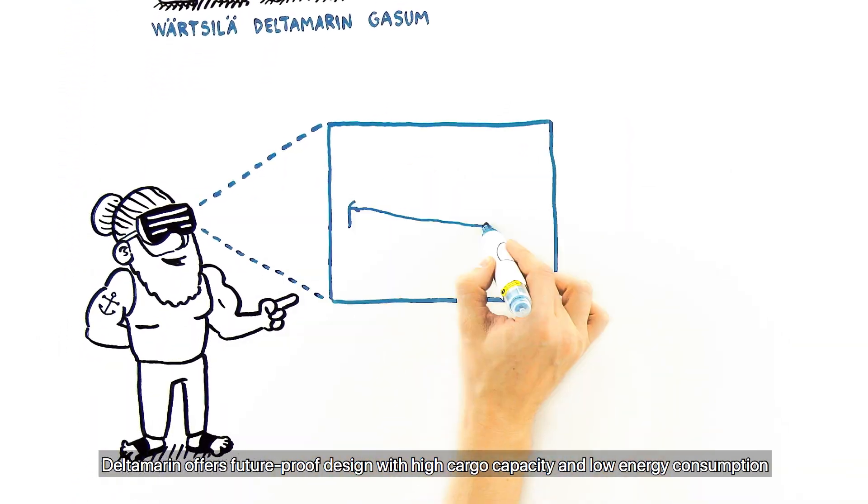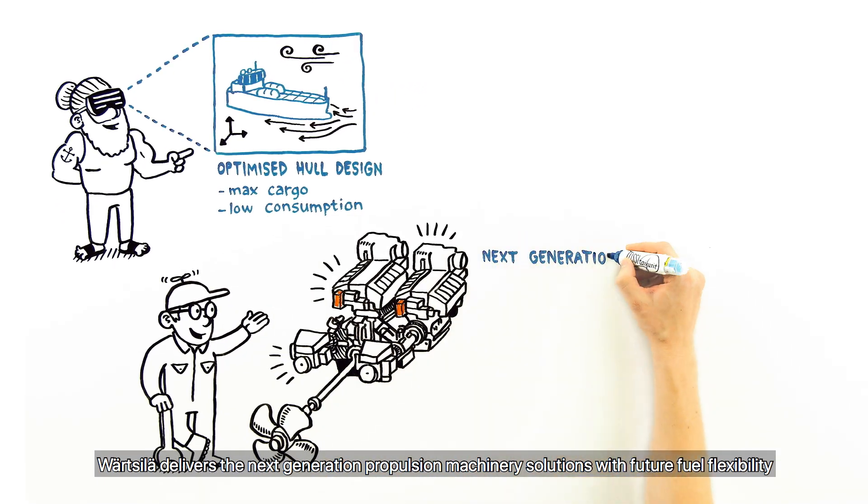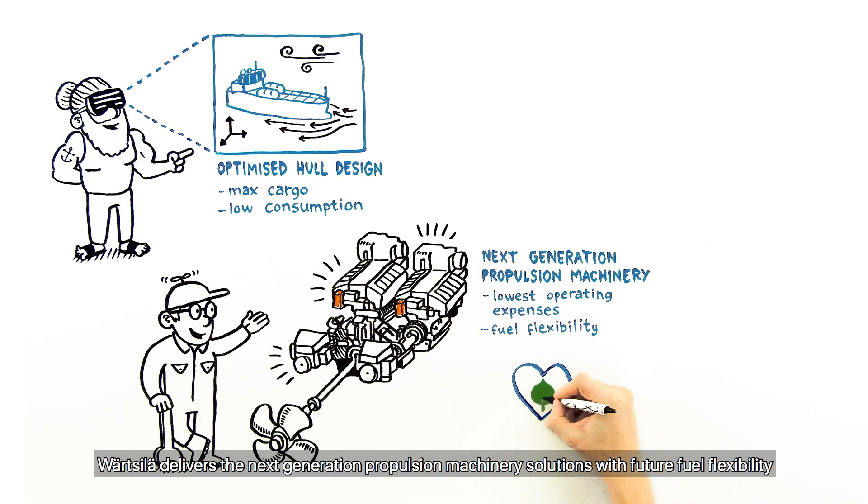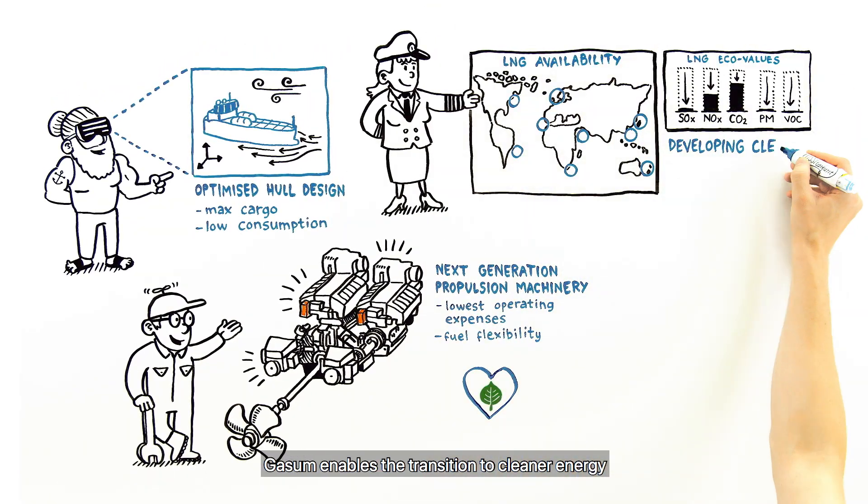Delta Marin offers future-proof design with high cargo capacity and low energy consumption. Wartzilla delivers the next-generation propulsion machinery solutions with future fuel flexibility. Gassum enables the transition to cleaner energy.